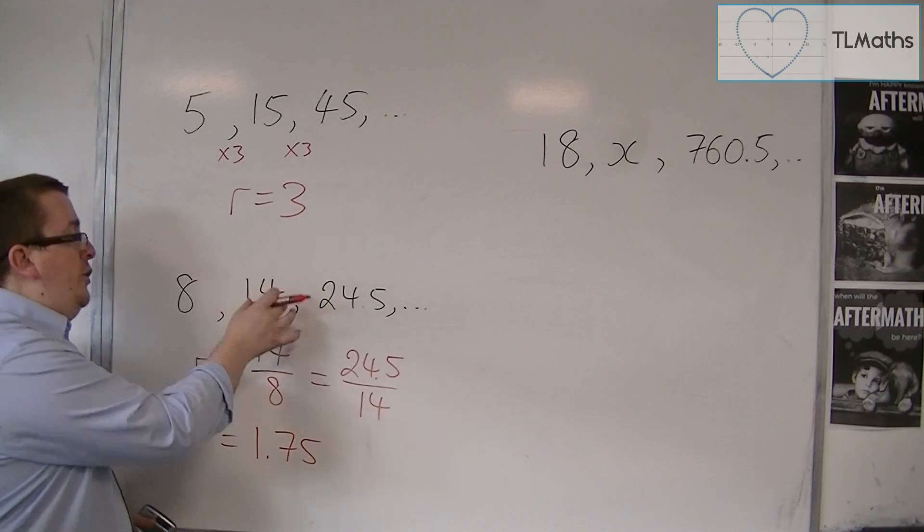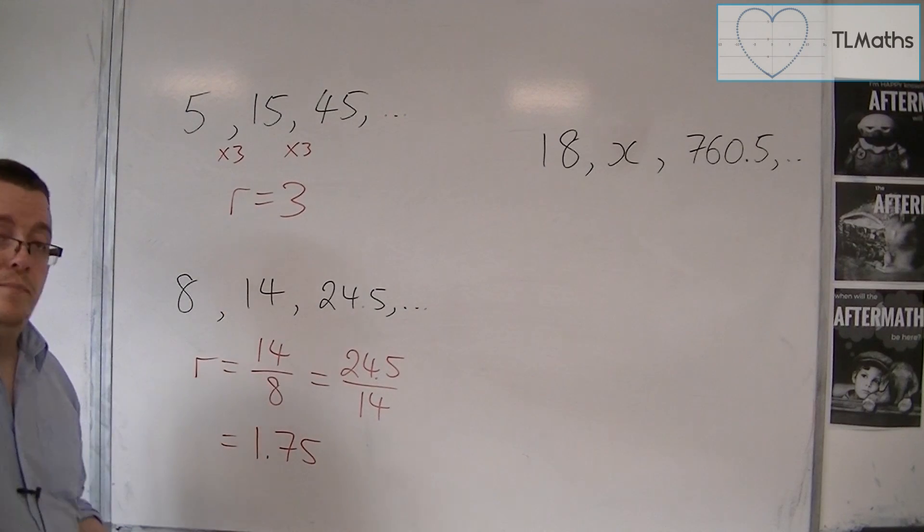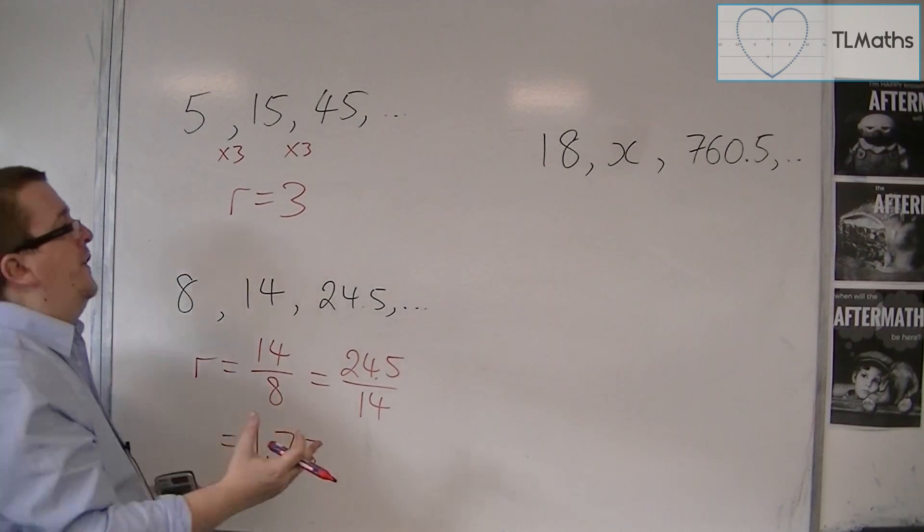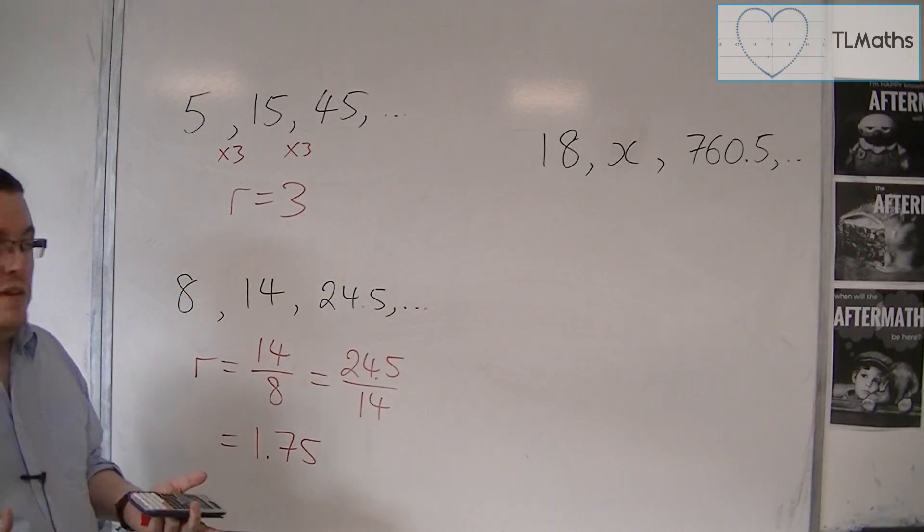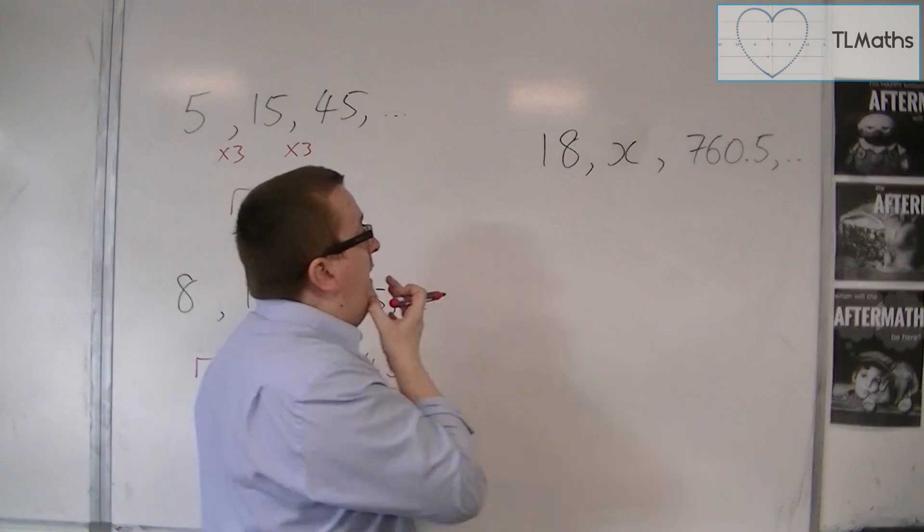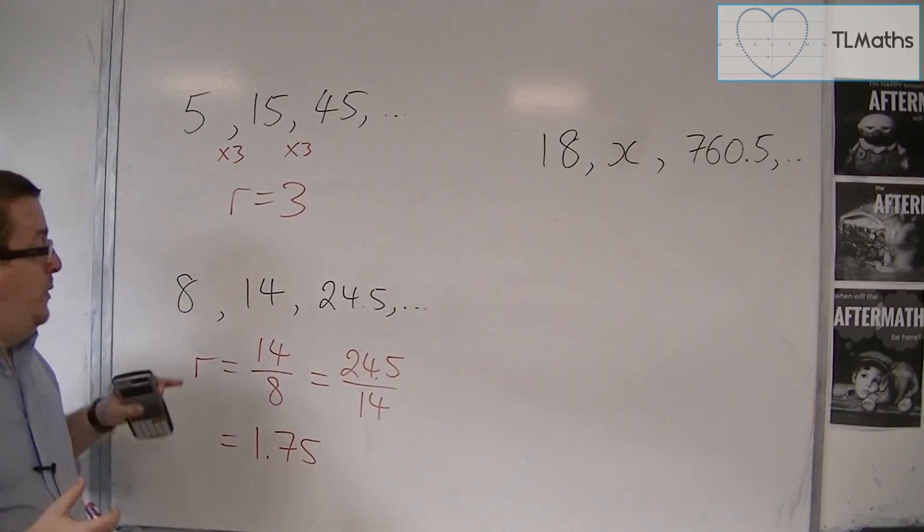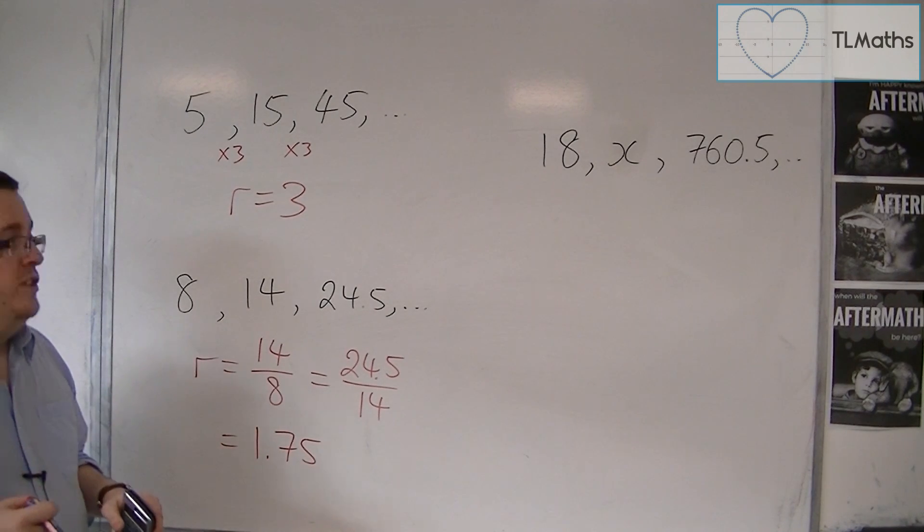So this method of choosing a value, choosing a term in the sequence and dividing it by the previous term will work. Now, what if you're given a sequence where there is a number missing, so you're given three terms in a geometric sequence and we don't know this second term? Well, maybe we could use one form of this trick in order to do that.